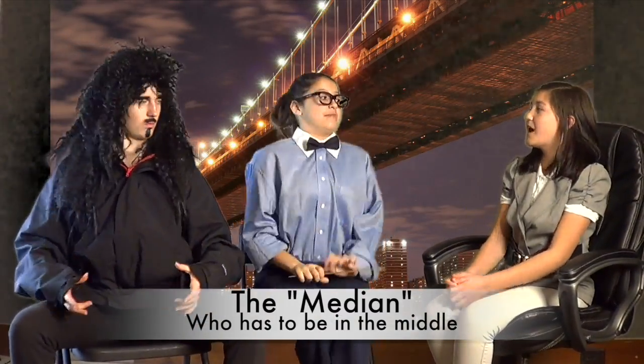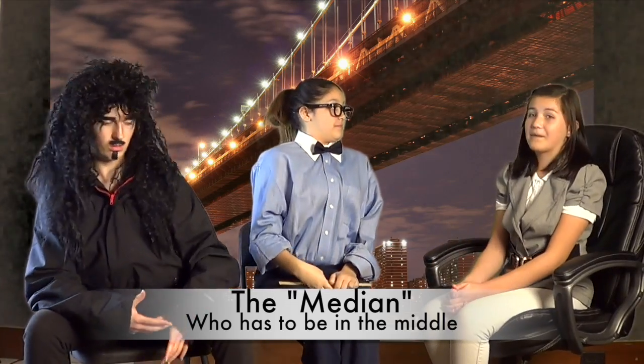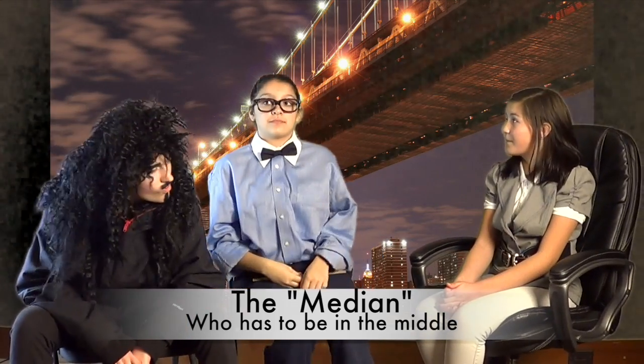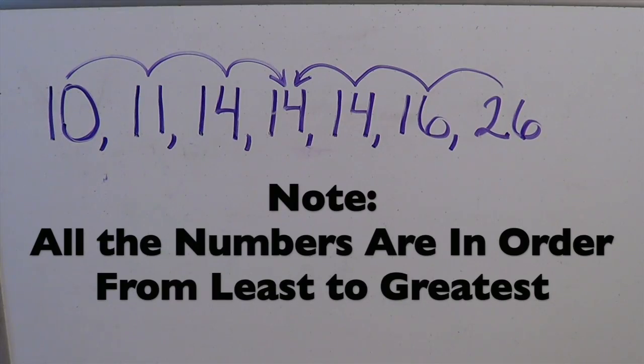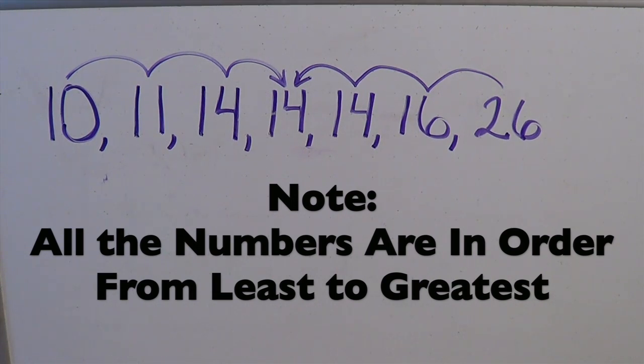Median, tell us how you find the average number in a group of numbers. Well, I believe that the middle number is the average number. Mean just said it's a made-up number — 15 isn't even in the group of numbers. I believe that the middle number is the average number because it's a part of the group of numbers, and it isn't affected by extreme numbers in the group.